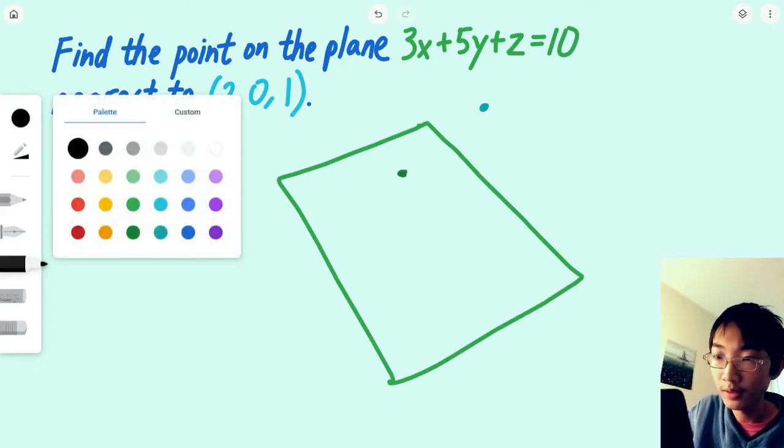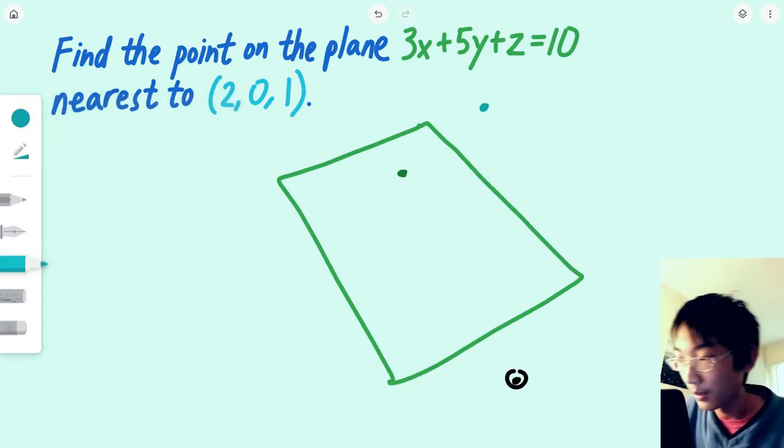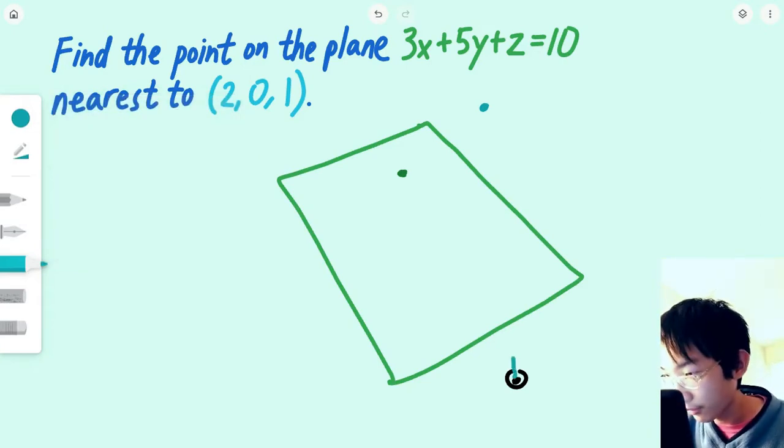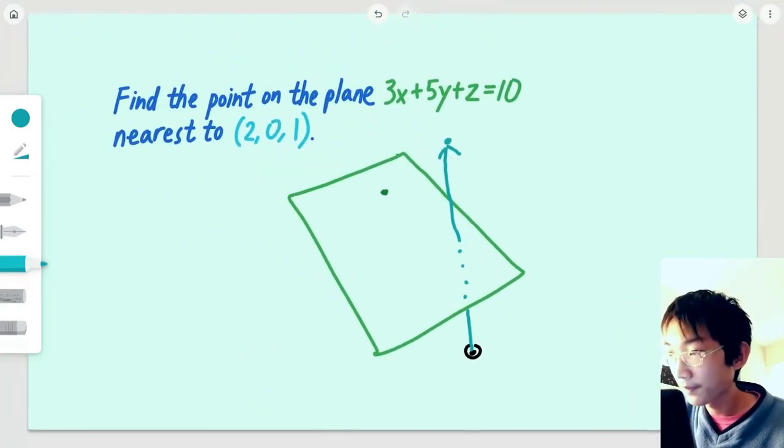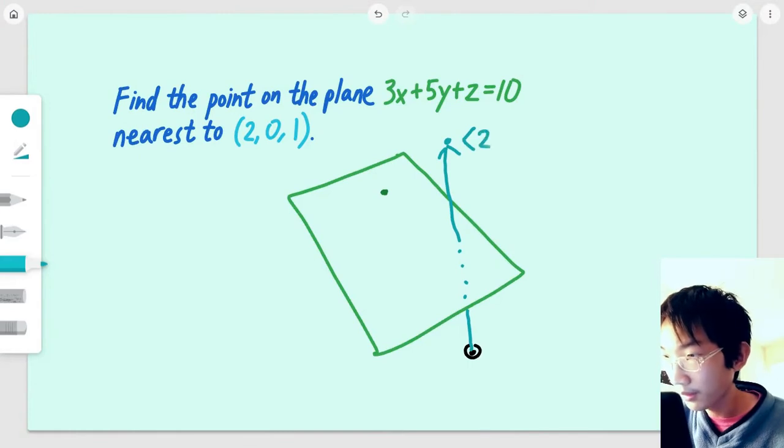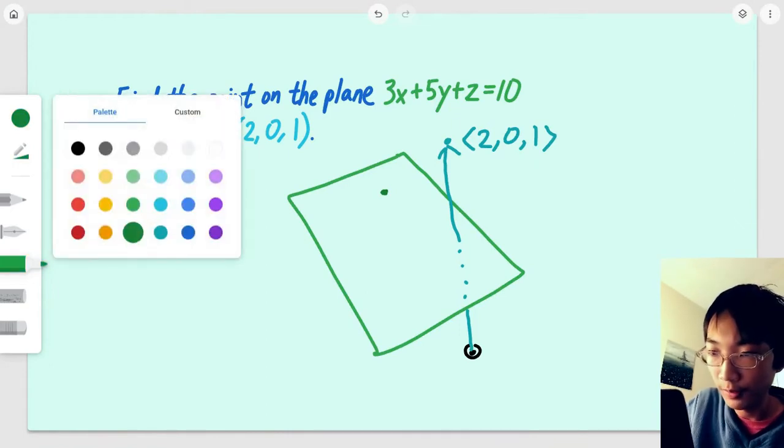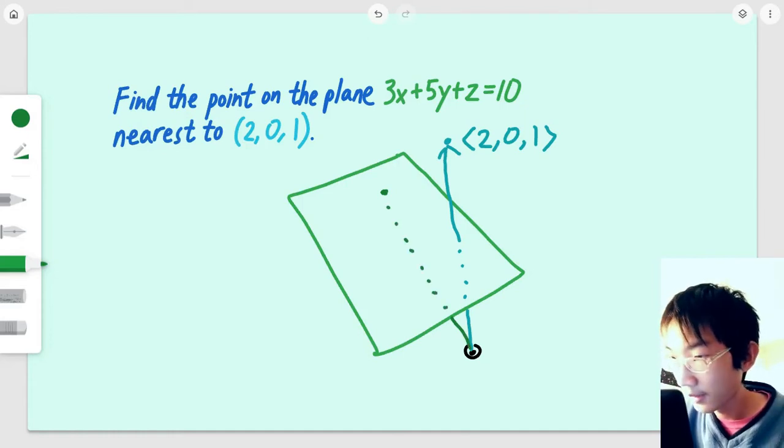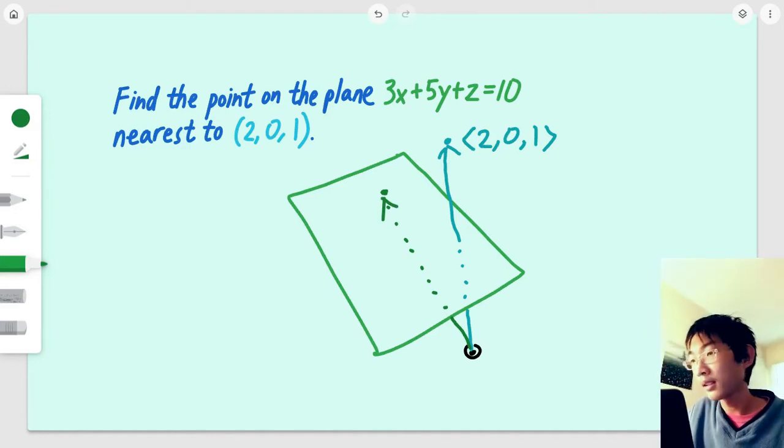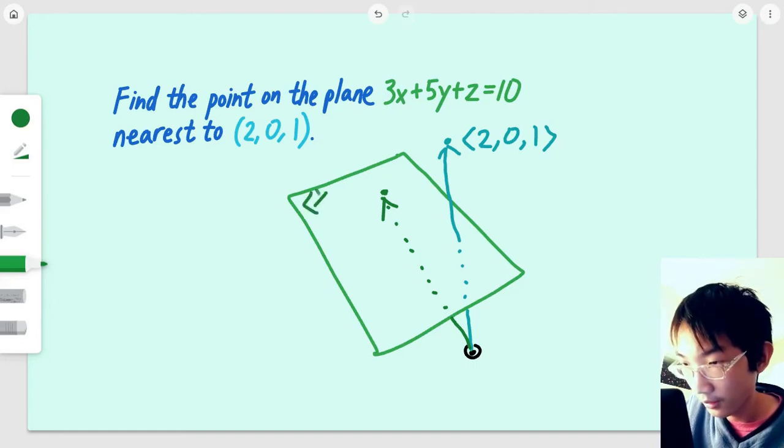We want to solve this problem with vectors. Let's define an origin for our vectors to sit on. The point vector will go from the origin, maybe through the plane, to the point, and it's going to have the component (2, 0, 1). We'll also have a vector that goes from the origin to the point on the plane. Since it's a point on the plane and will satisfy this equation, let's give it the components x, y, z.